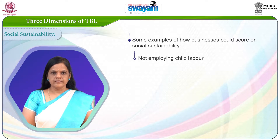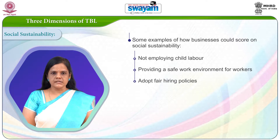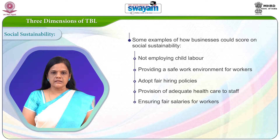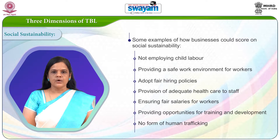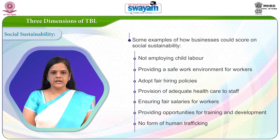Not employing child labor. Providing a safe work environment for workers. Adapting fair hiring policies. Provision of adequate health care to staff. Ensuring fair salaries to workers. Providing opportunities for training and development. And not practicing any form of human trafficking would enhance the social score of businesses. However, it is quite difficult to measure this dimension as it is more subjective in nature. The GRI has developed guidelines in order to enable businesses to report and measure their social impact.